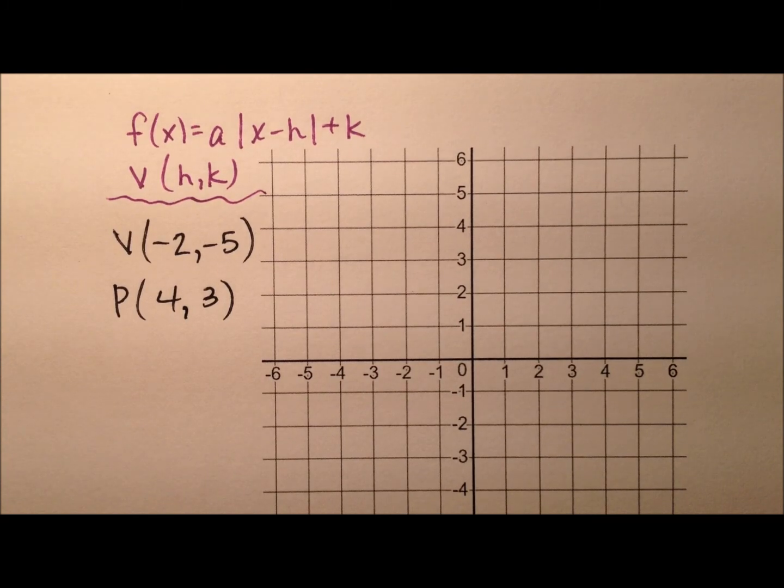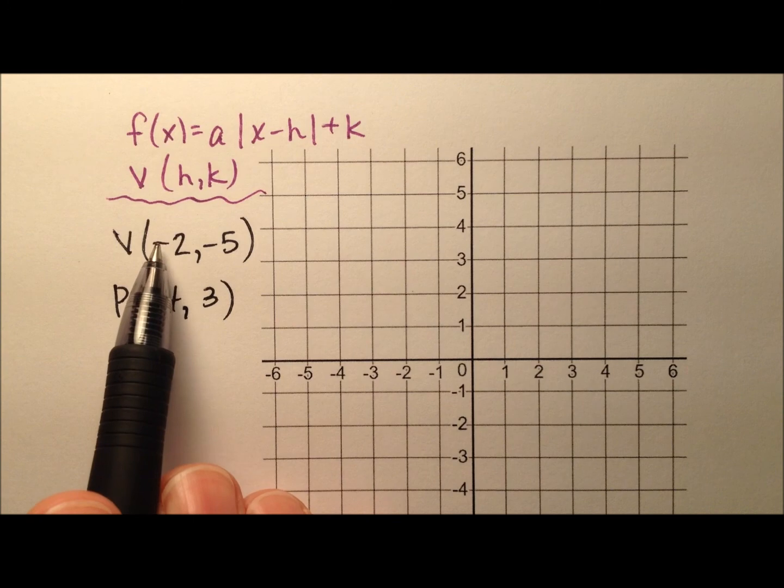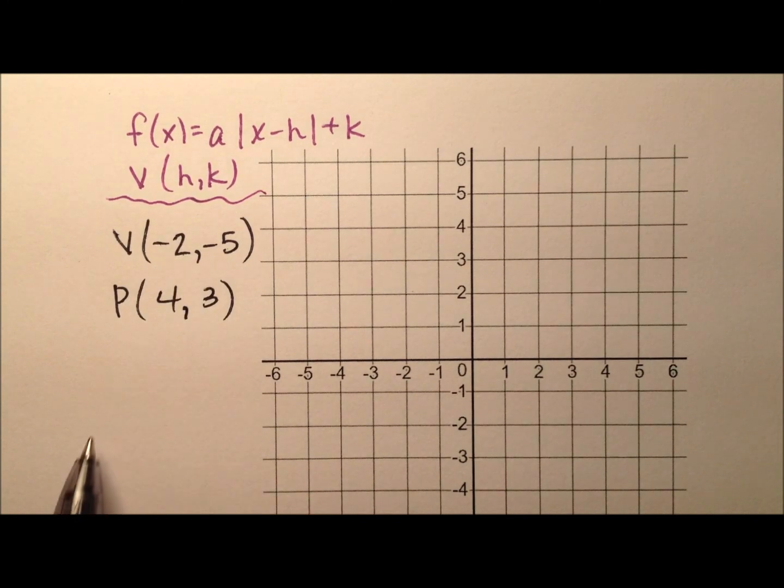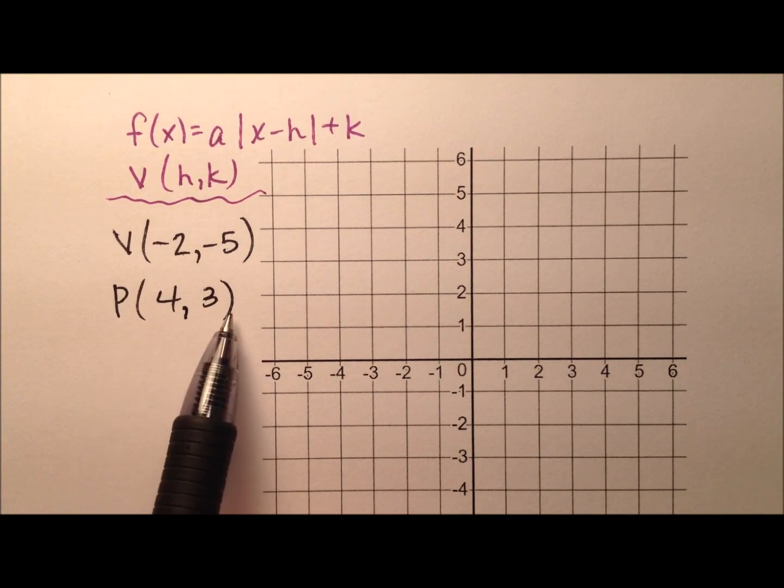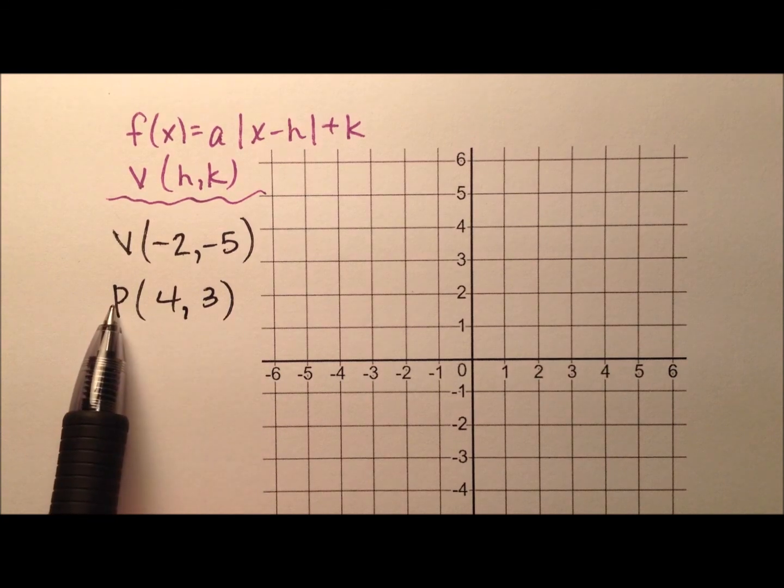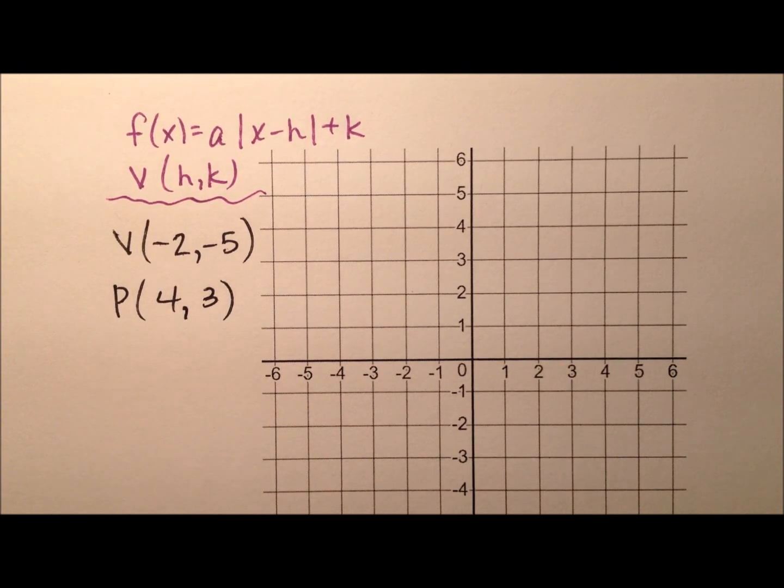In this video, we're going to write an absolute value function whose vertex is at the ordered pair (-2, -5), and one of the legs of the v-shape of the absolute value graph will pass through point P, which is (4, 3).